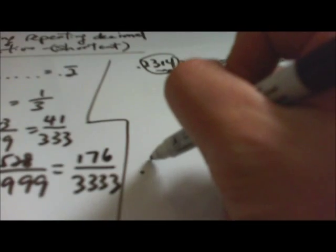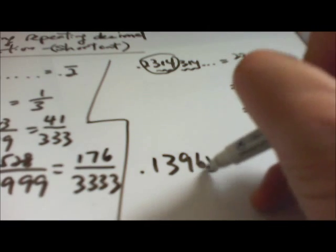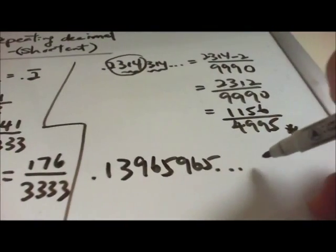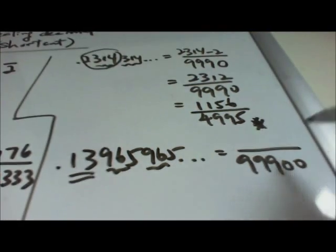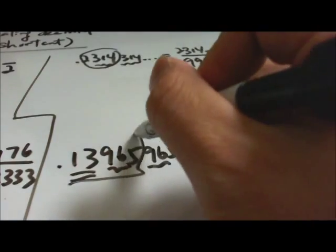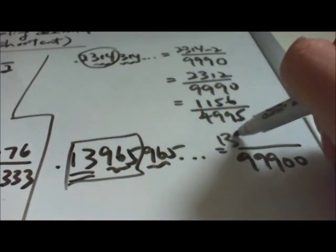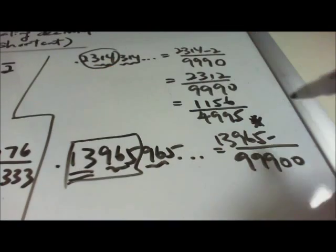Point 1396596565 and so on. You notice that three numbers are repeated, so it's 999, and two are not repeated, so 00. You have 13965 minus 13.